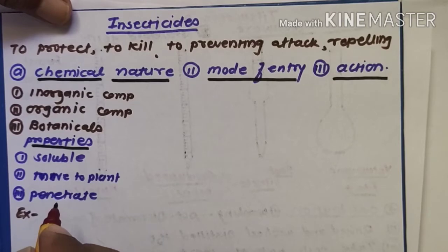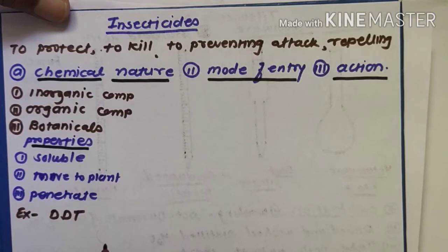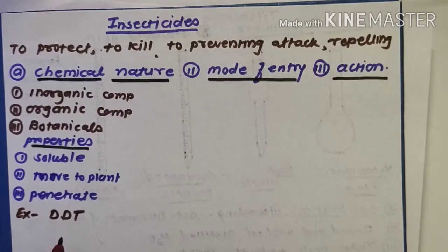The first example is chlorinated hydrocarbons — like DDT, which is 1,1,1-trichloro-2,2-bis(p-chlorophenyl)ethane. DDT is found to be extremely effective against flies and mosquitoes. However, DDT has environmental hazards due to its long residential life and its accumulation in the environment.